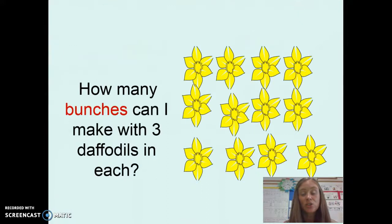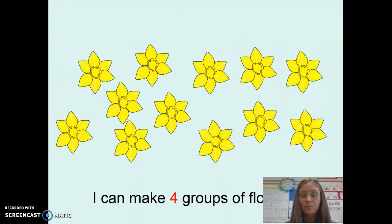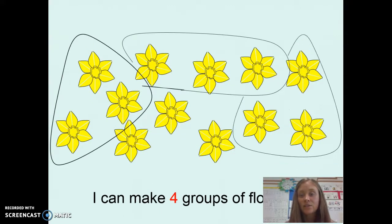If I change the question slightly and said how many bunches can I make with three daffodils in each? This time we don't know how many bunches we can make. We just know we have 12 daffodils and we want to put them three in each group. So this is our grouping method. We circle three daffodils to find out how many groups we can make. So we can make four groups.